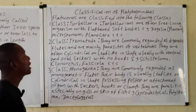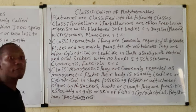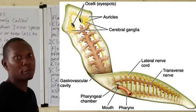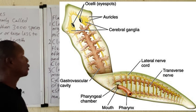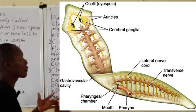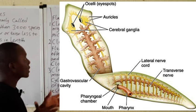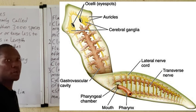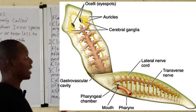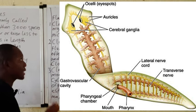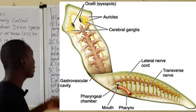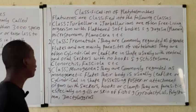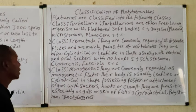The class Turbellaria comprises the free-living flatworms. A common species we usually refer to is the planaria, which is being displayed on the board. They have a very flat, softened body. From the diagram you can see that the flatworm has eyespots and various other structures. We also have Microstomum and Planaria serra as other examples of the class Turbellaria.